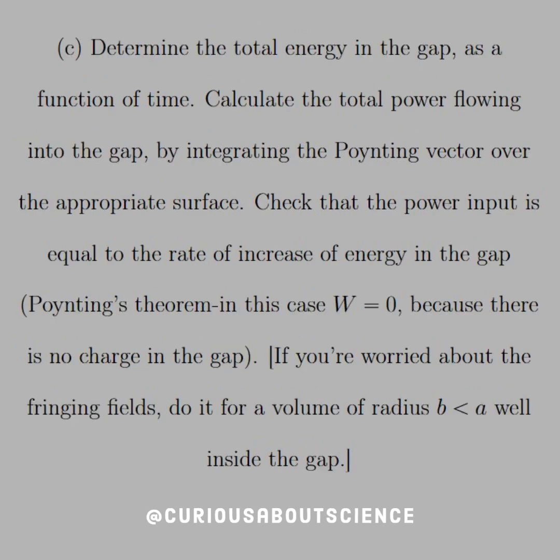Part C: Determine the total energy in the gap as a function of time. Calculate the total power flowing into the gap by integrating the Poynting vector over the appropriate surface. Check that the power input equals the rate of increase of energy in the gap, Poynting theorem in the case of W equals 0, because there is no charge in the gap. If you're worried about the fringing fields, do it for a volume of radius B less than A, well inside the gap.